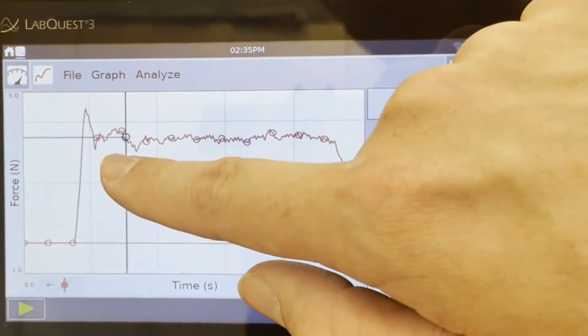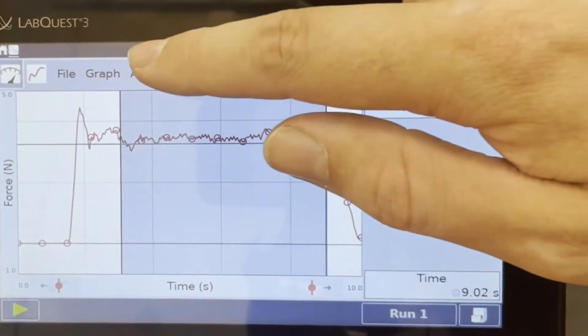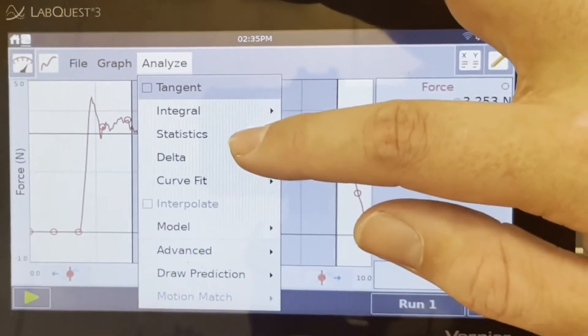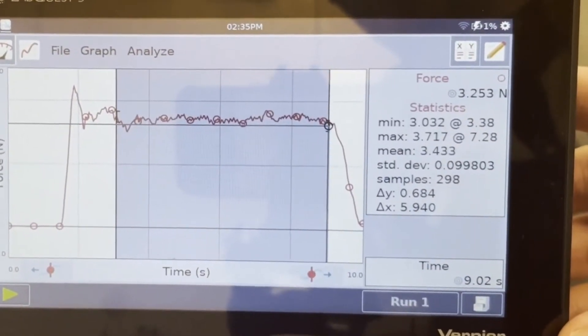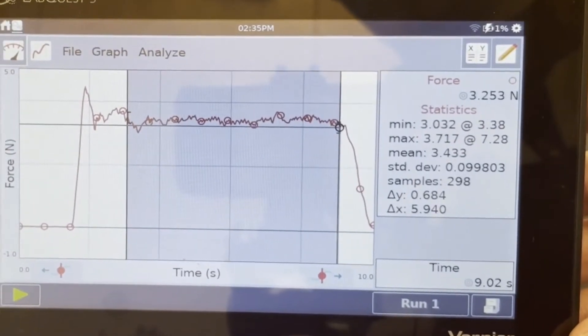And now we'll select this range for kinetic friction. Figure out what the average is. And the average is 3.433 newtons.